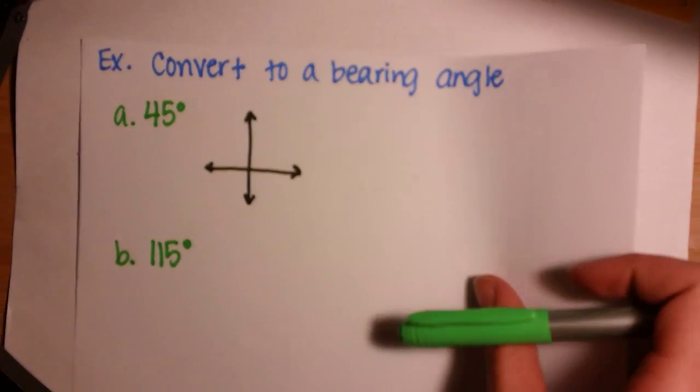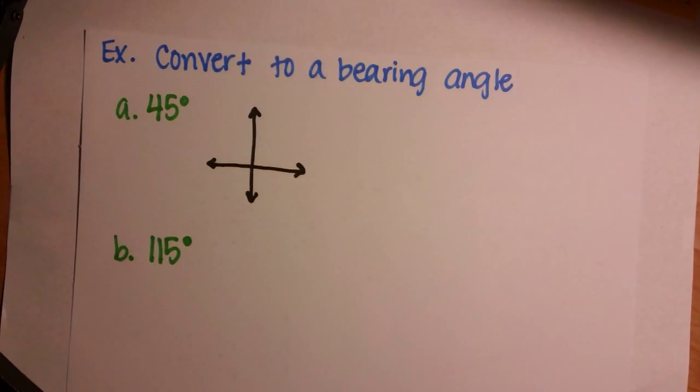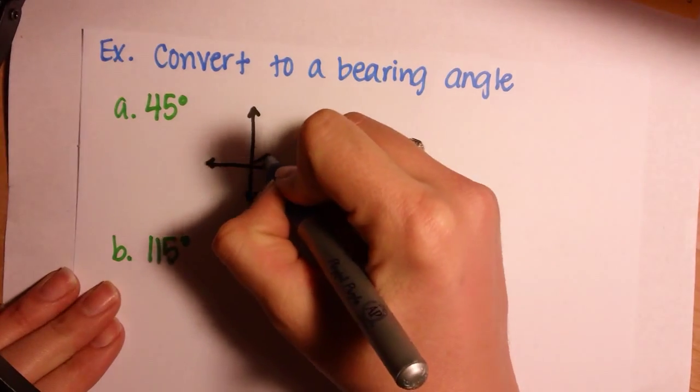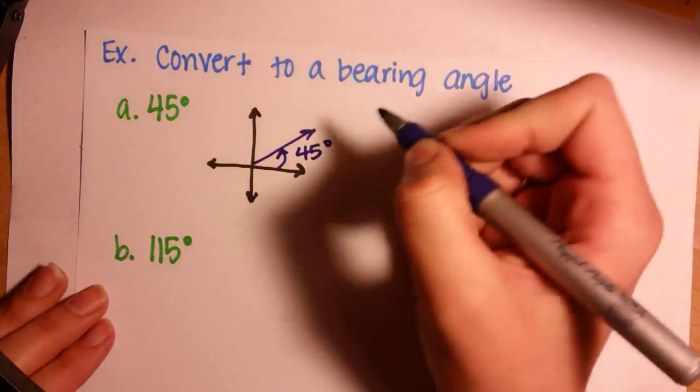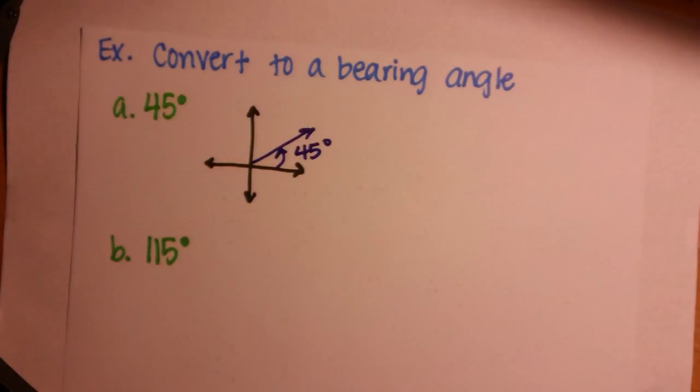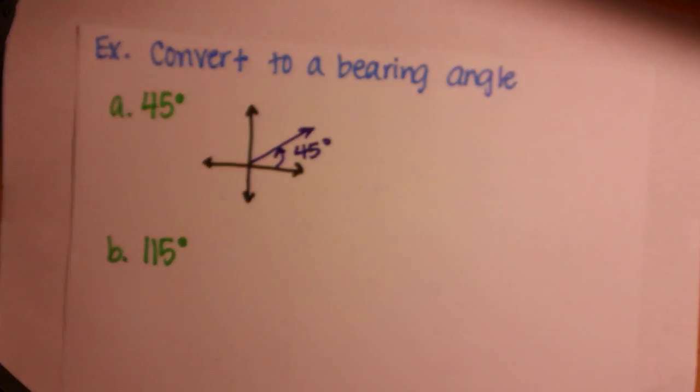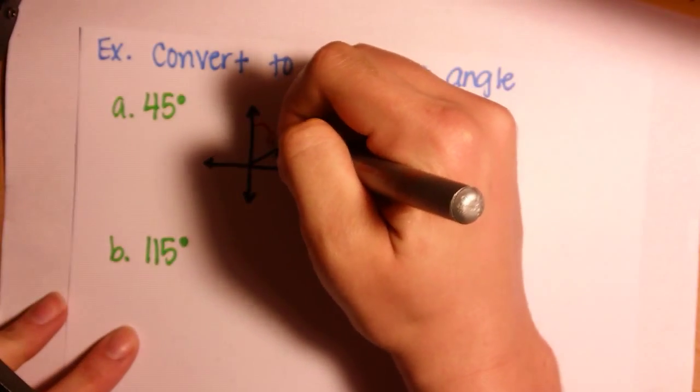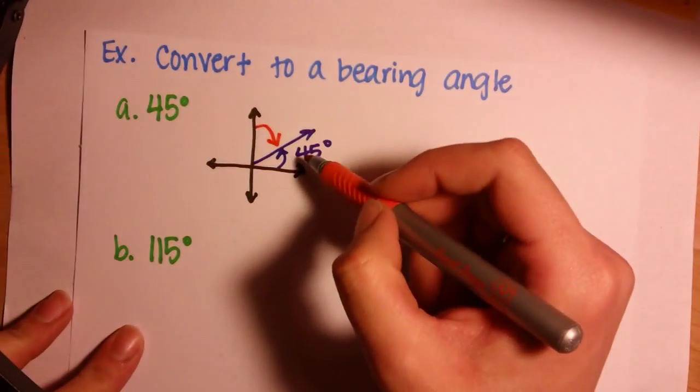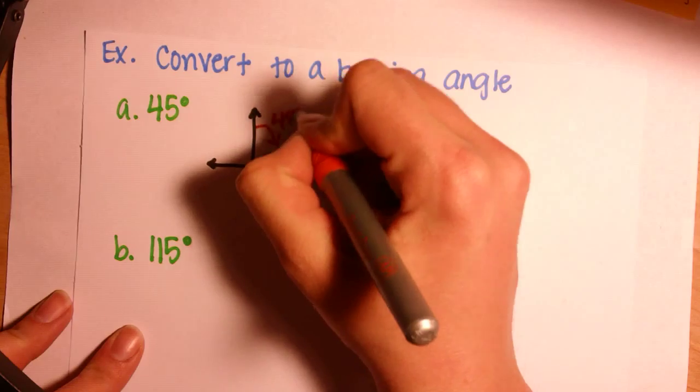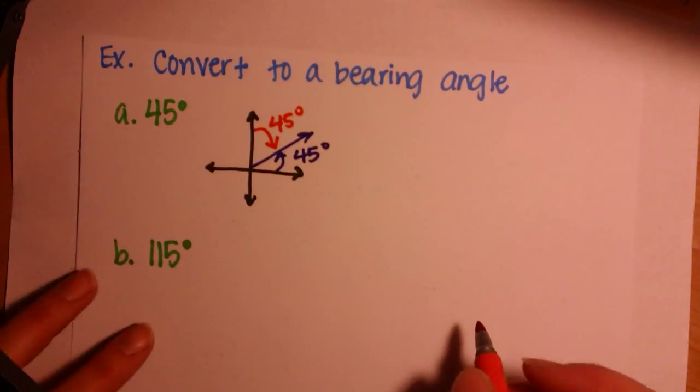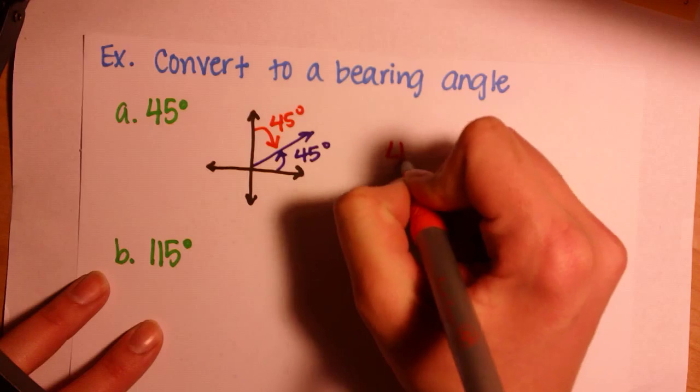Let's try a few examples. So, if you want to convert 45 degrees to a bearing angle, first we'll draw our 45 degrees. Remember, degrees are always measured from the x-axis. So, to calculate our bearing, we must go from due north. We have 90 minus our 45, which is still 45 degrees. So our bearing, in this case, is 45 degrees.